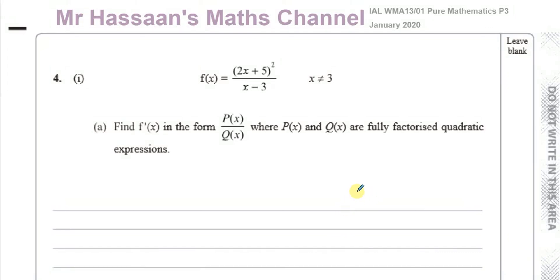This is question number four from January 2020, International A-Level P3 at Excel. We have a question about differentiation. We've been given a function f of x equals (2x plus 5) squared over (x minus 3), where x can't be 3 since it would be undefined. It says find the derivative of f of x, or the gradient function of f of x, in the form p of x over q of x, where p of x and q of x are fully factorized quadratic expressions.